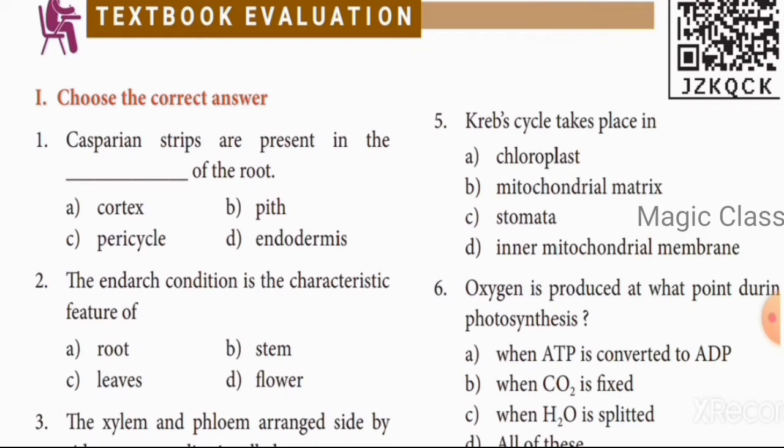First question: Casparian strips are present in the dash of the roots. Answer: Endodermis. Second question: the conjoint condition is the characteristic feature of dash. Answer: Stem.